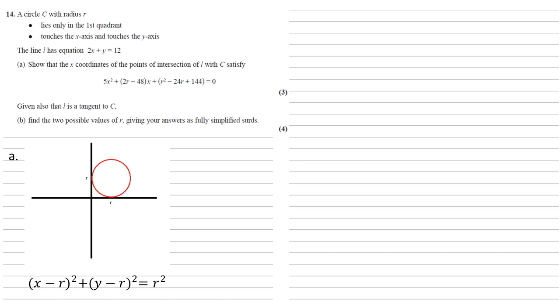We can find the points of intersection by rearranging our line equation. So 2x plus y equals 12 gives us y equals 12 minus 2x, and substituting this into our circle equation.